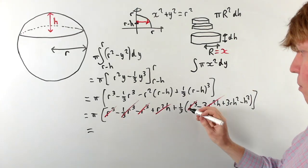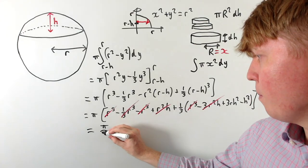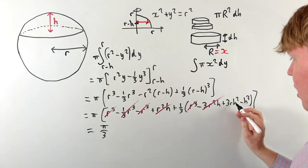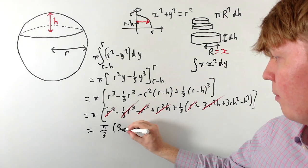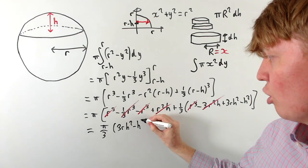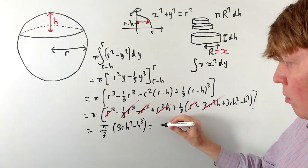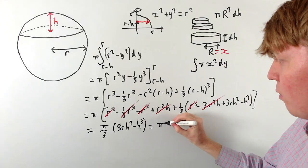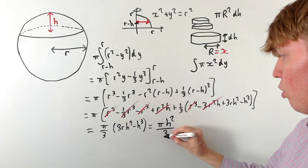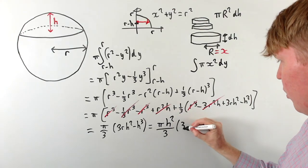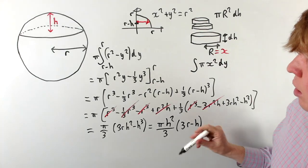After all the cancellations, we're left with π times (1/3) times (3rh² − h³). We can factorise this to get the nice formula: π h² / 3 × (3r − h).